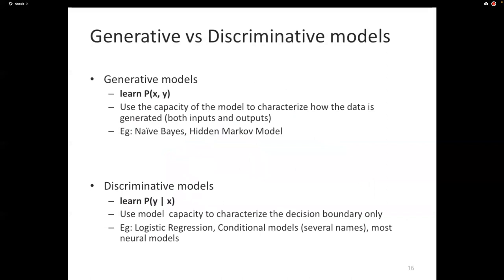So very briefly, discriminative and generative models. In generative models, we learn the probability of X, Y, whereas in discriminative models, we learn the probability of Y given X. The way to think about what it means to learn the probability of X, Y or Y given X is to think about what is the model capacity being used for. When we are learning P(X,Y), namely the joint model or the generative model, we are using the parameters of the model to construct examples and also the labels.